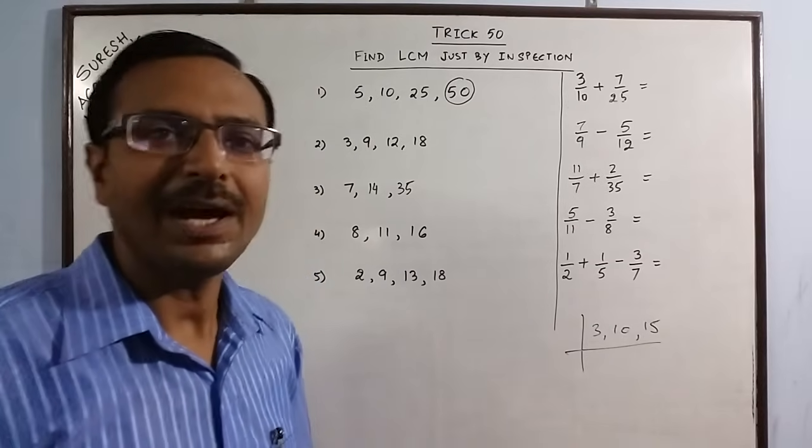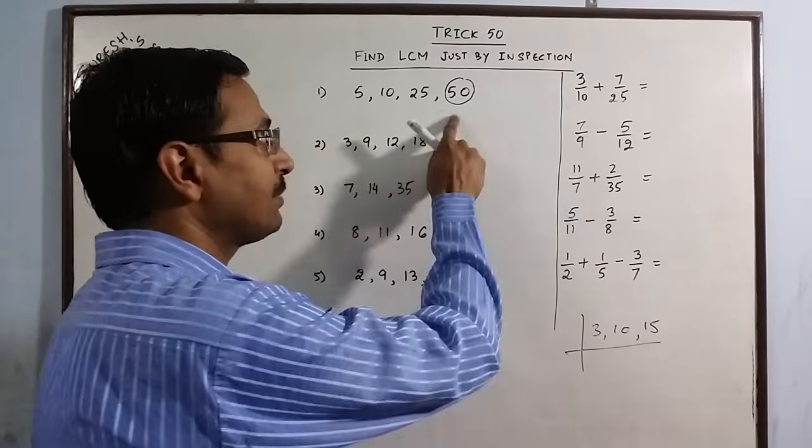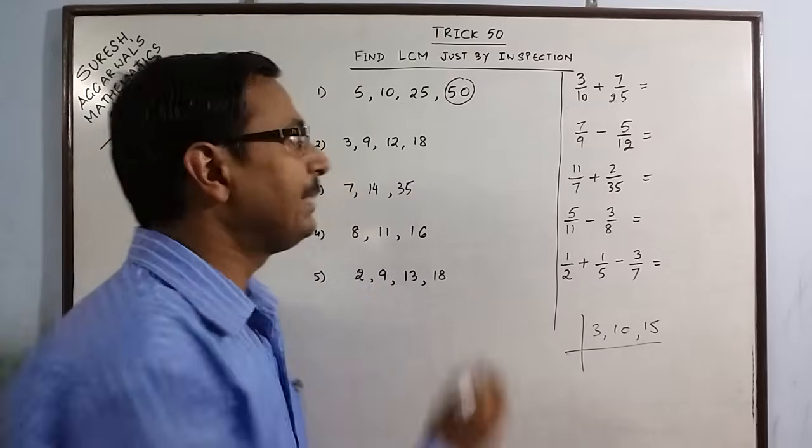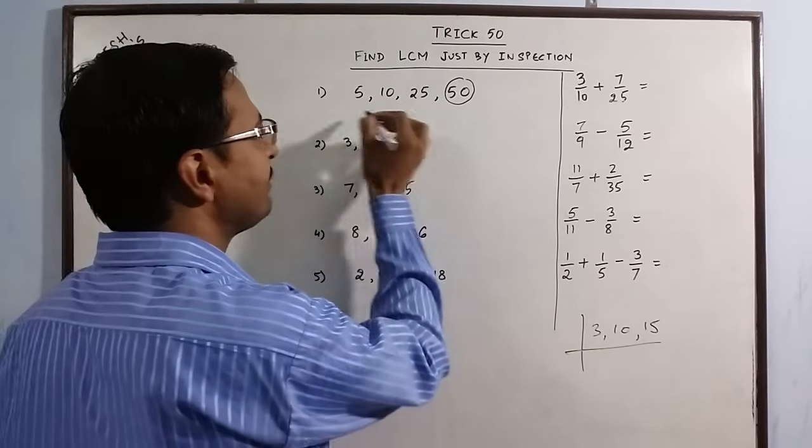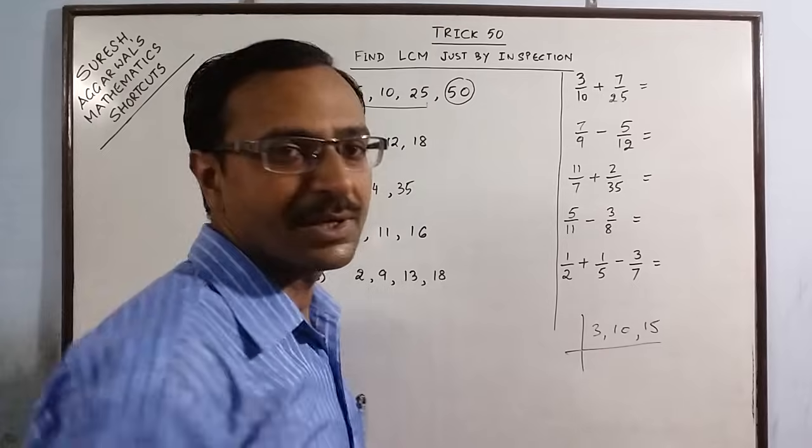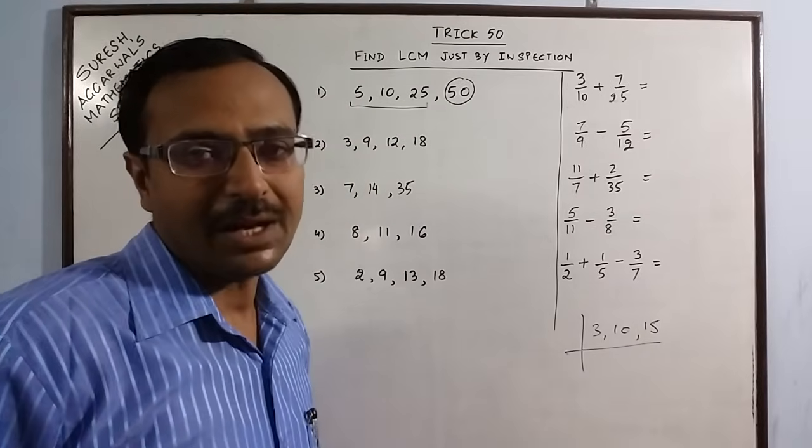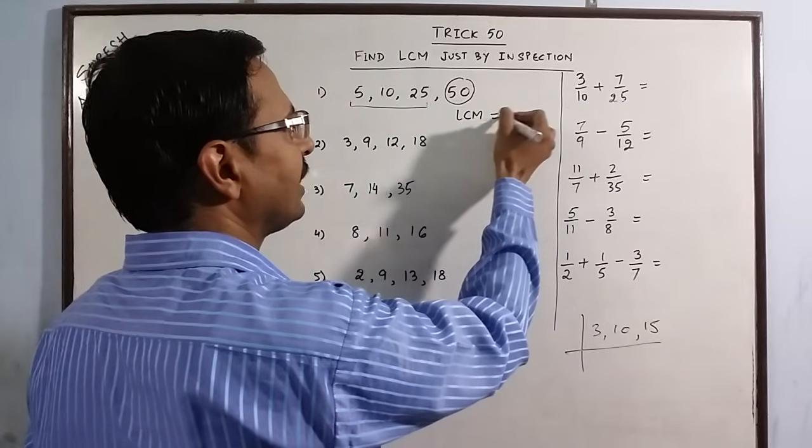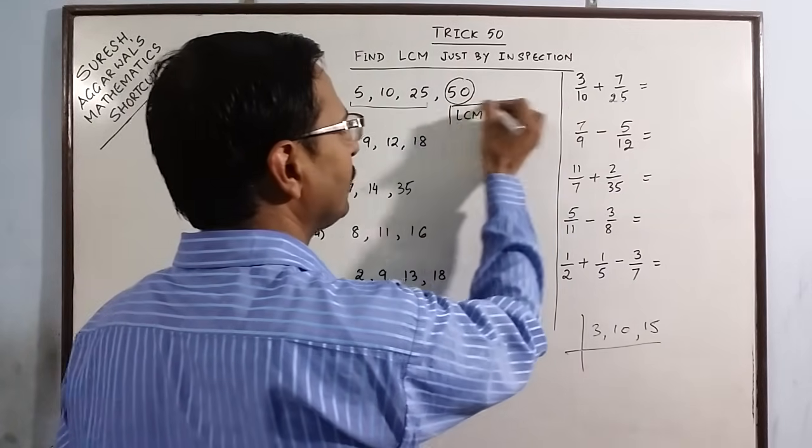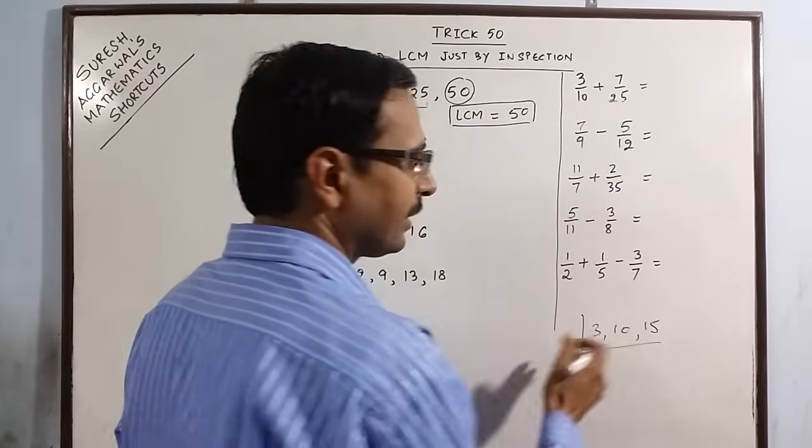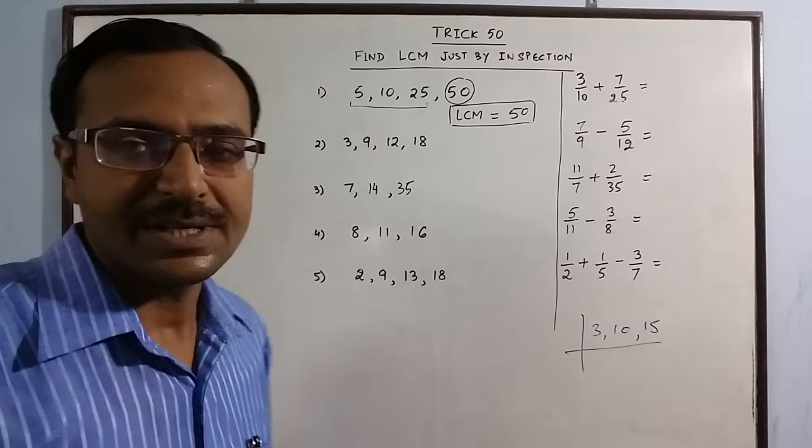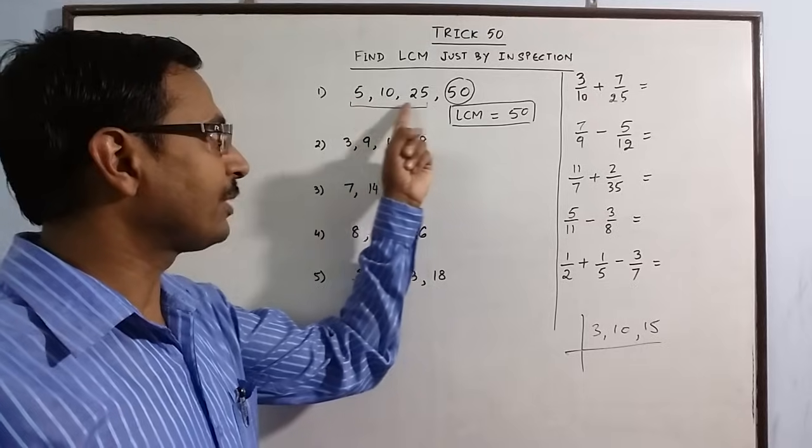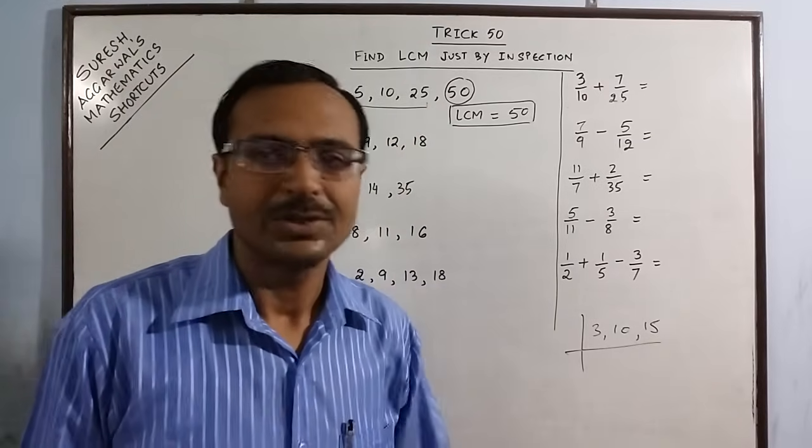So whenever we have this situation where the highest number is a multiple of the remaining numbers, it is divisible by all these numbers, then we arrive at the LCM directly. The highest number is the required LCM. No need of writing this long method, just inspect and check whether the highest number is a multiple of the remaining numbers or not. This is the first condition.